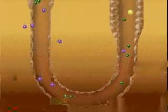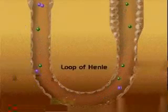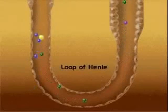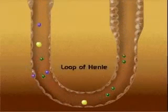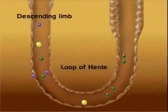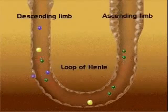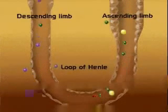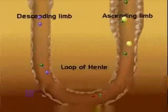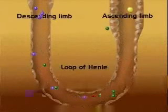This system is called countercurrent because of the dynamics set up by the hairpin turn of the loop of Henle. The direction of flow in the descending limb of the loop is opposite from the direction of flow in the ascending limb. By flowing in opposite directions in such close proximity, a unique interaction occurs.